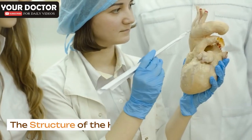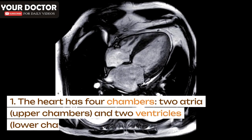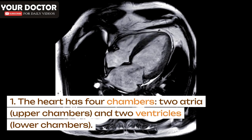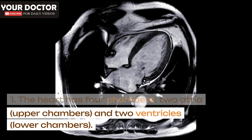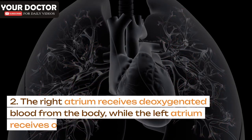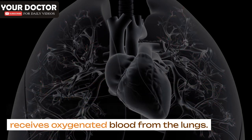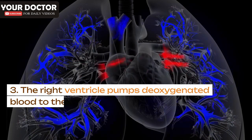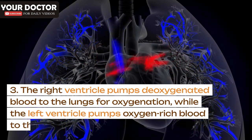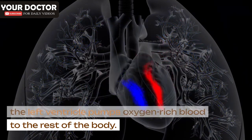The heart has four chambers: two atria, the upper chambers, and two ventricles, the lower chambers. The right atrium receives deoxygenated blood from the body, while the left atrium receives oxygenated blood from the lungs. The right ventricle pumps deoxygenated blood to the lungs for oxygenation, while the left ventricle pumps oxygen-rich blood to the rest of the body.